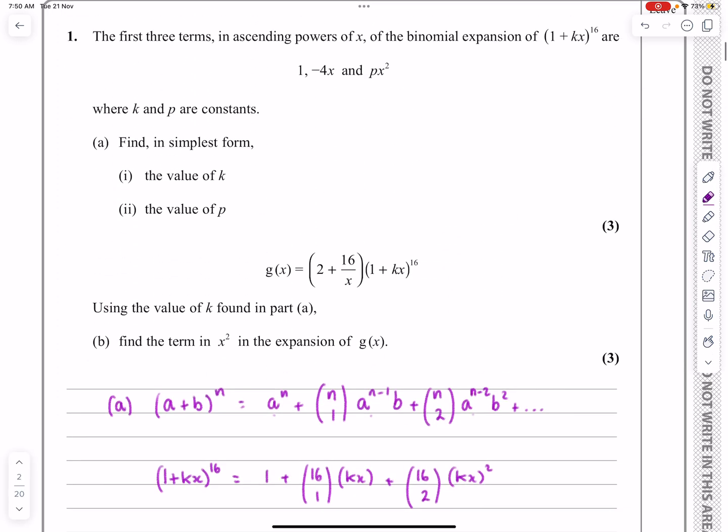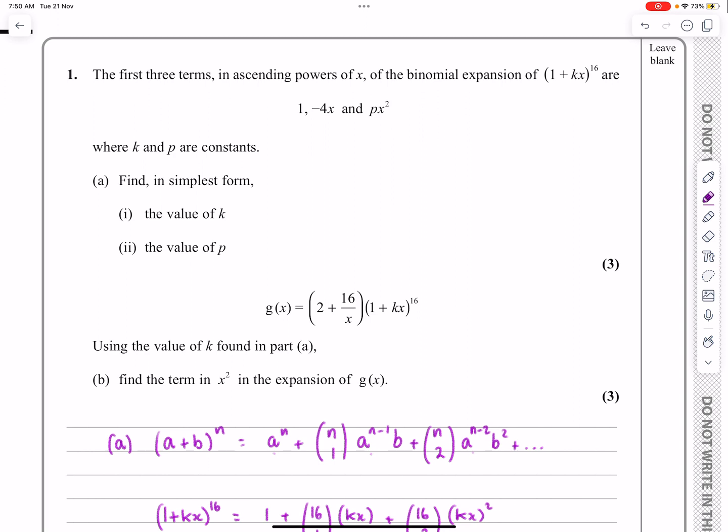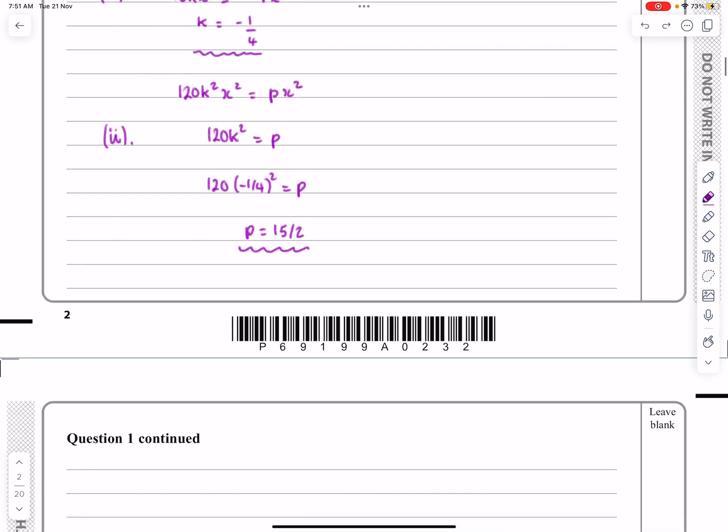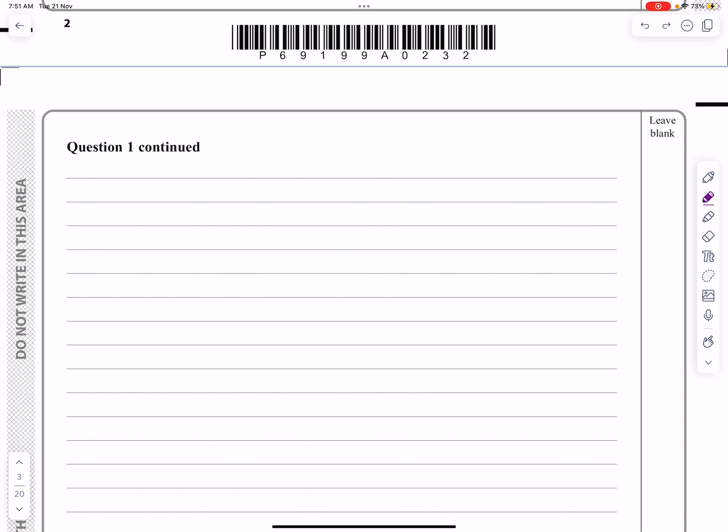So that's part 1 being done, and that's part 2 being done, so we've worked out what k and p are now. So what does the second part of the question say? Second part of the question says, using the value of k found in part a, if g(x) works out to be this thing here now, can we find the term in x² when we do that expansion? Yeah, absolutely, let's go ahead and have a go at trying to do that.